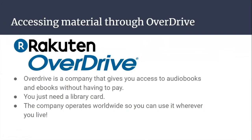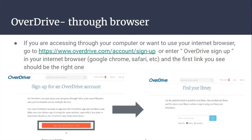Accessing material through Overdrive. Overdrive is a company that gives you access to audiobooks and e-books without having to pay. You'll just need a library card. The company operates worldwide, so you can use it wherever you want. If you're accessing through your computer or want to use your internet browser, go to overdrive.com/account/signup, or enter 'Overdrive sign up' in your browser like Google Chrome or Safari, and the first link you see should be the right one.